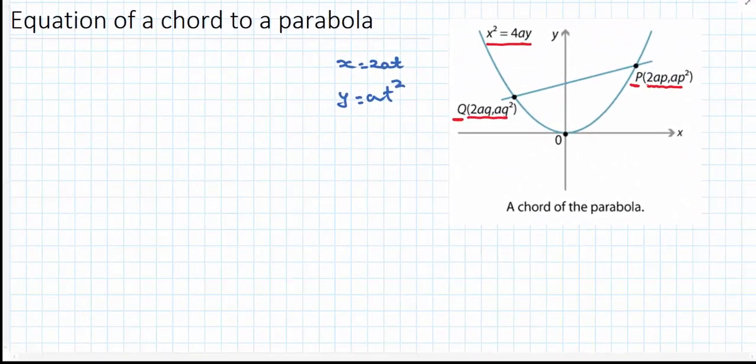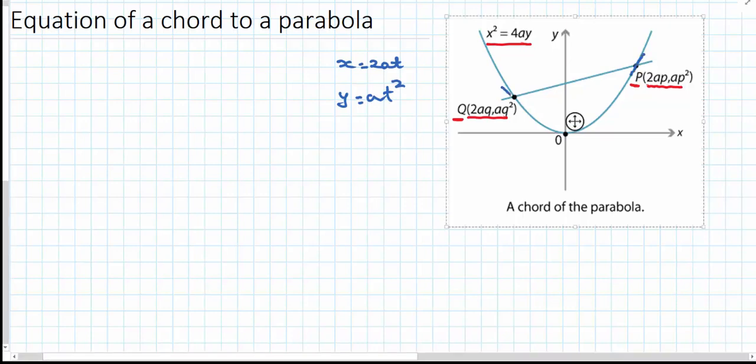Since the gradient at p is different to the gradient at q, we can't have the same pronumeral representing those two gradients. So little p and little q are fixed—they represent the gradient of the tangent at these two points.